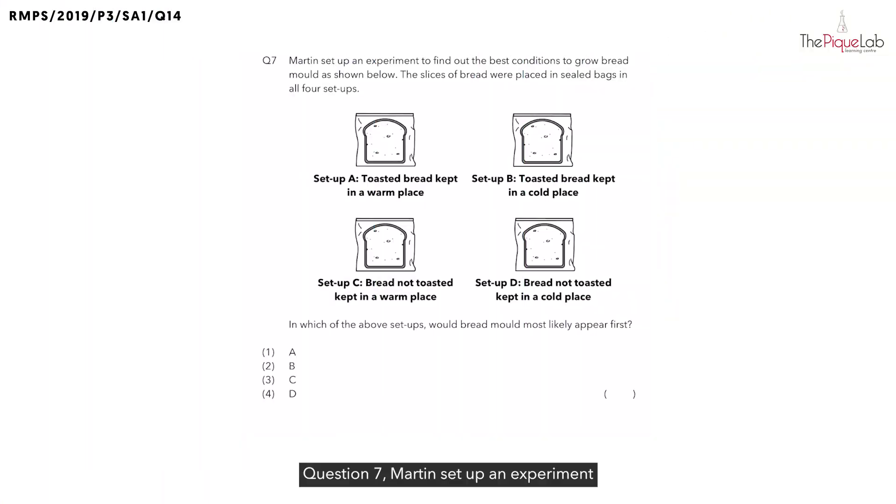Question 7. Martin set up an experiment to find out what are the best conditions to grow bread mold as shown below. The slices of bread were placed in sealed bags in all four setups. Now they want us to find out in which of the above setups would the bread mold most likely appear first. To answer this question, let's recall bread mold belongs to which group of living things? We know that bread mold is a type of fungi.